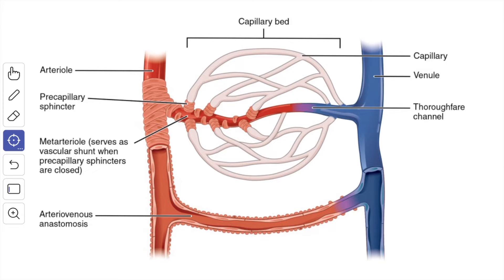The control of blood supply to smaller areas is affected through the arteriovenous anastomosis, the pre-capillary sphincters, and the thoroughfare channel.